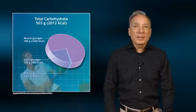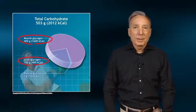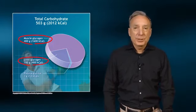The two major sites for carbohydrate storage in the body are muscle and liver. Carbohydrates are stored in the form of glycogen.